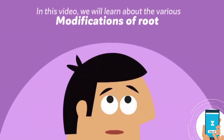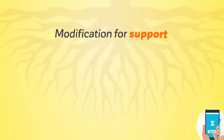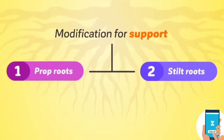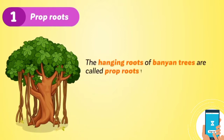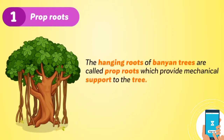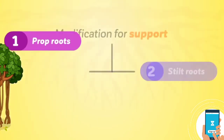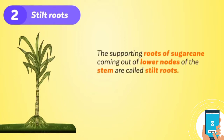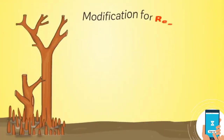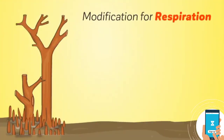In this video, we will learn about the various modifications of the root. Modifications for support: roots are modified into two different forms to give extra support to the plant. Number one: prop roots — the hanging roots of banyan trees are called prop roots, which provide mechanical support to the tree. Example: Ficus benghalensis. Number two: stilt roots — the supporting roots of sugarcane coming out of the lower nodes of the stem are called stilt roots. Example: Saccharum officinarum.